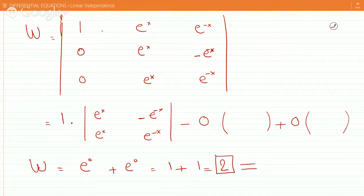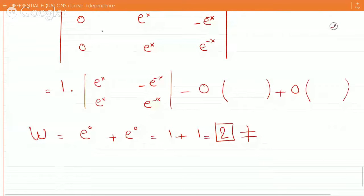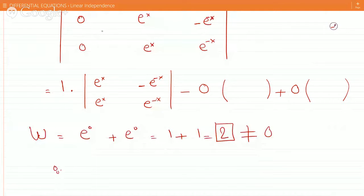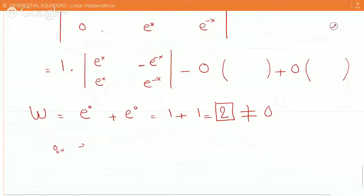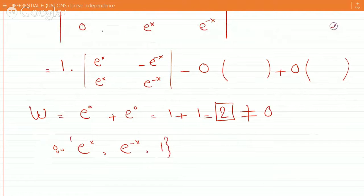So this is completely independent of x. That equals two, and therefore they are linearly independent. Right? Therefore, e to the x, e to the minus x and one are linearly independent.